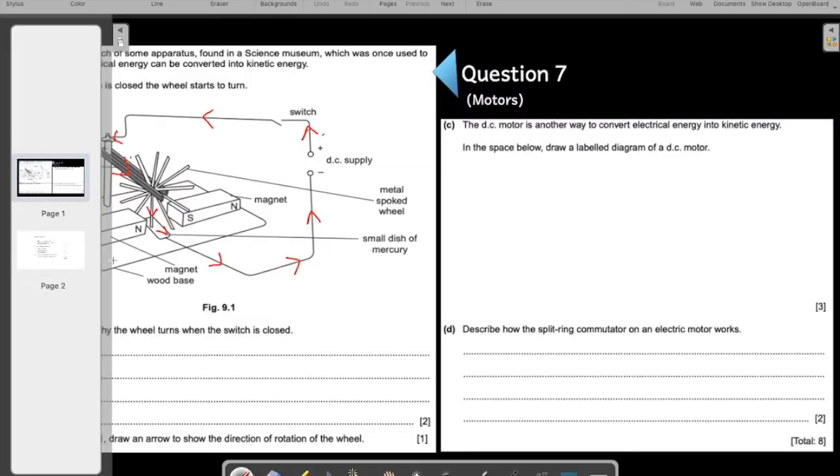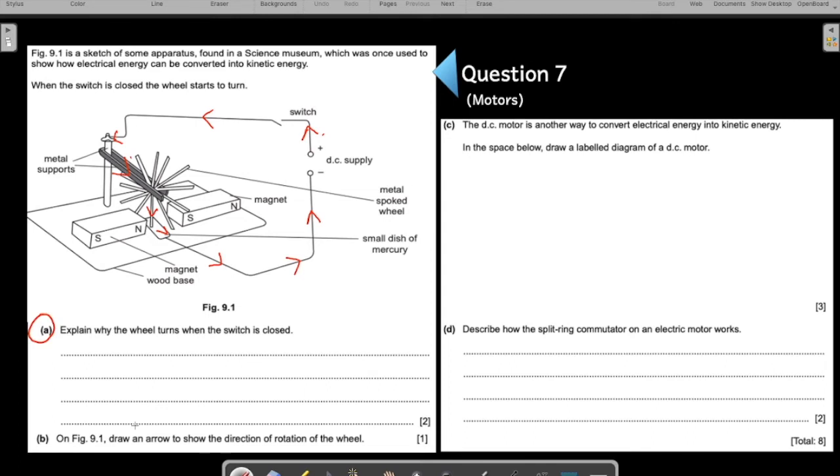Let us come to the next question, B part. On this figure, draw an arrow to show the direction of the rotation of the wheel. They are telling you to draw the arrow. If you will use Fleming's left hand rule on this spike...